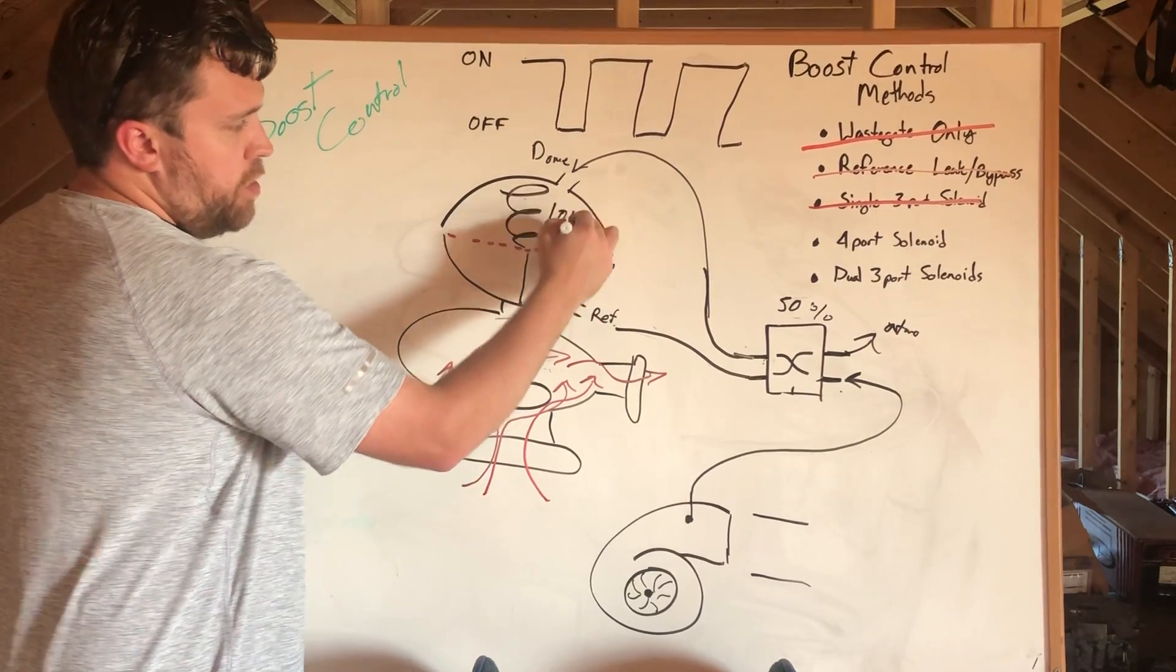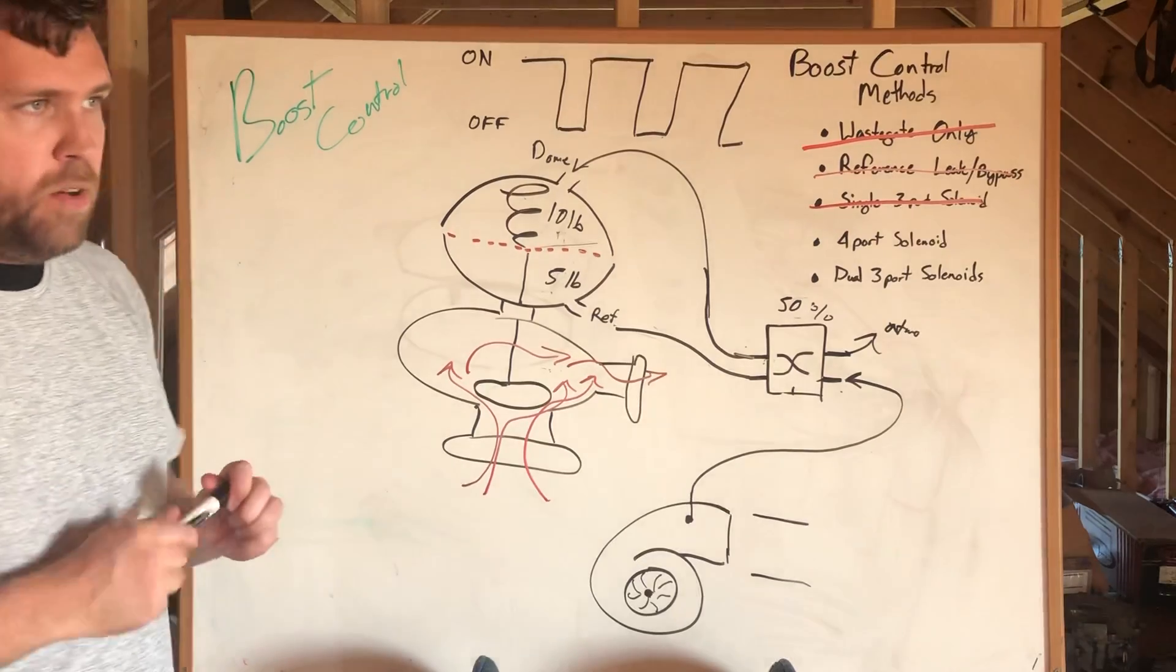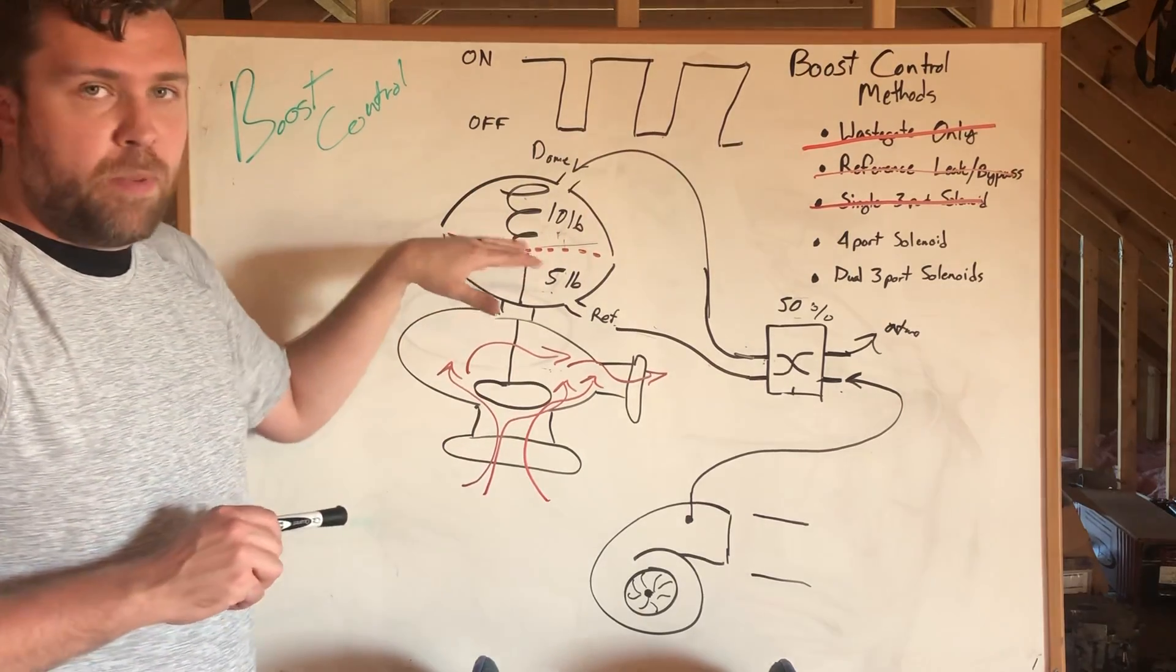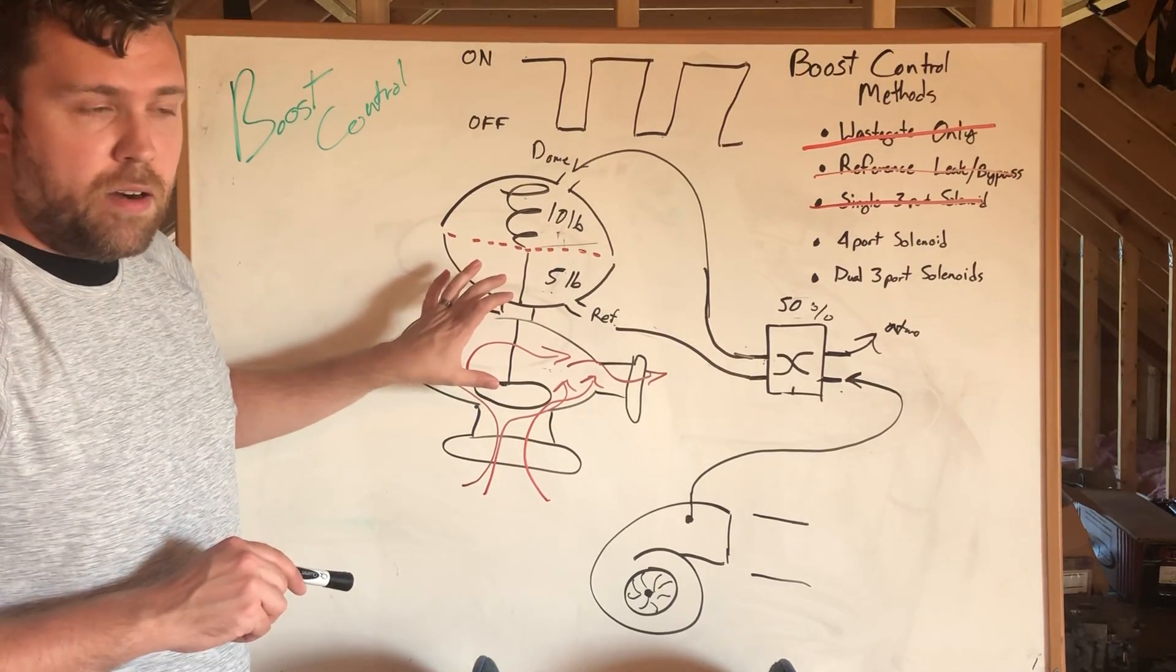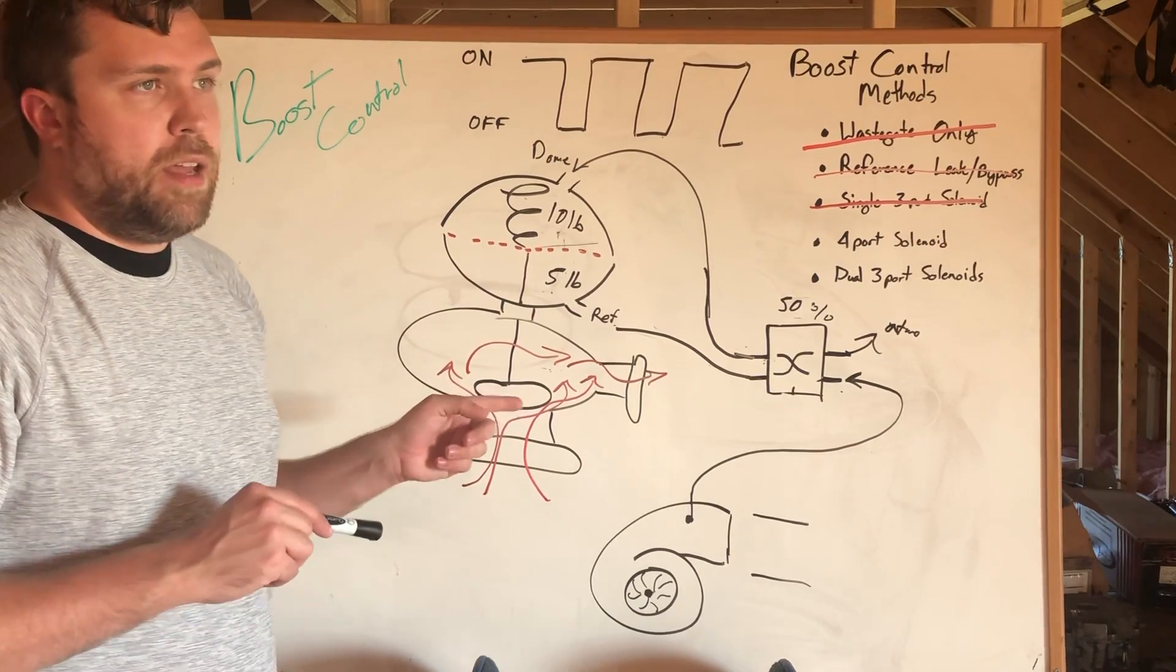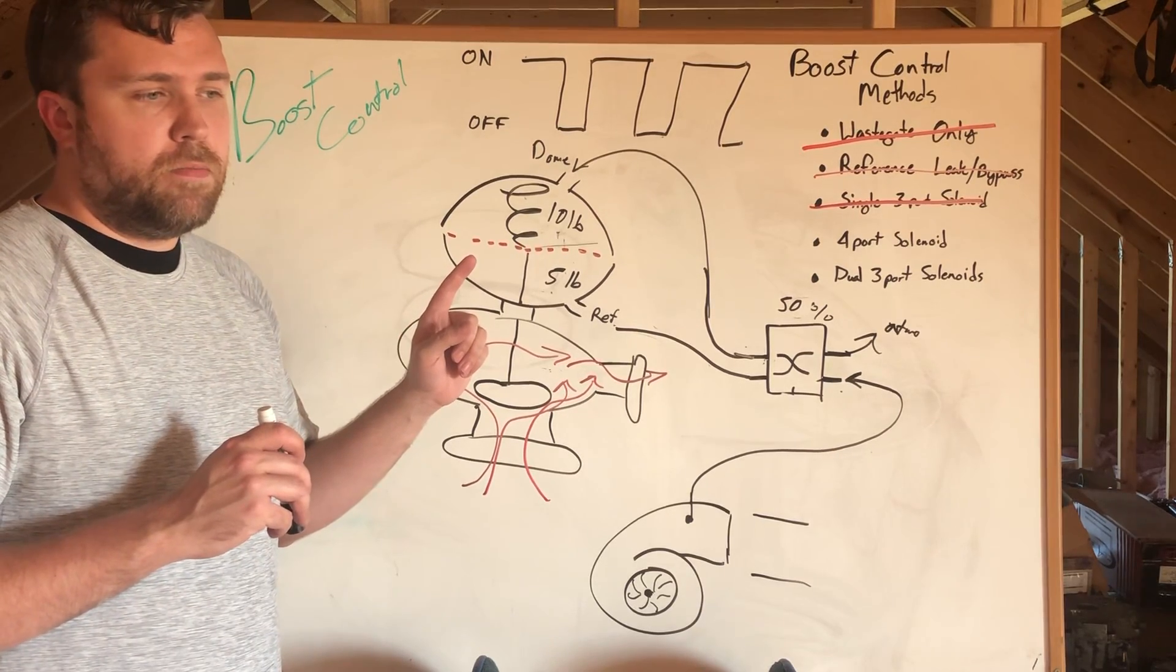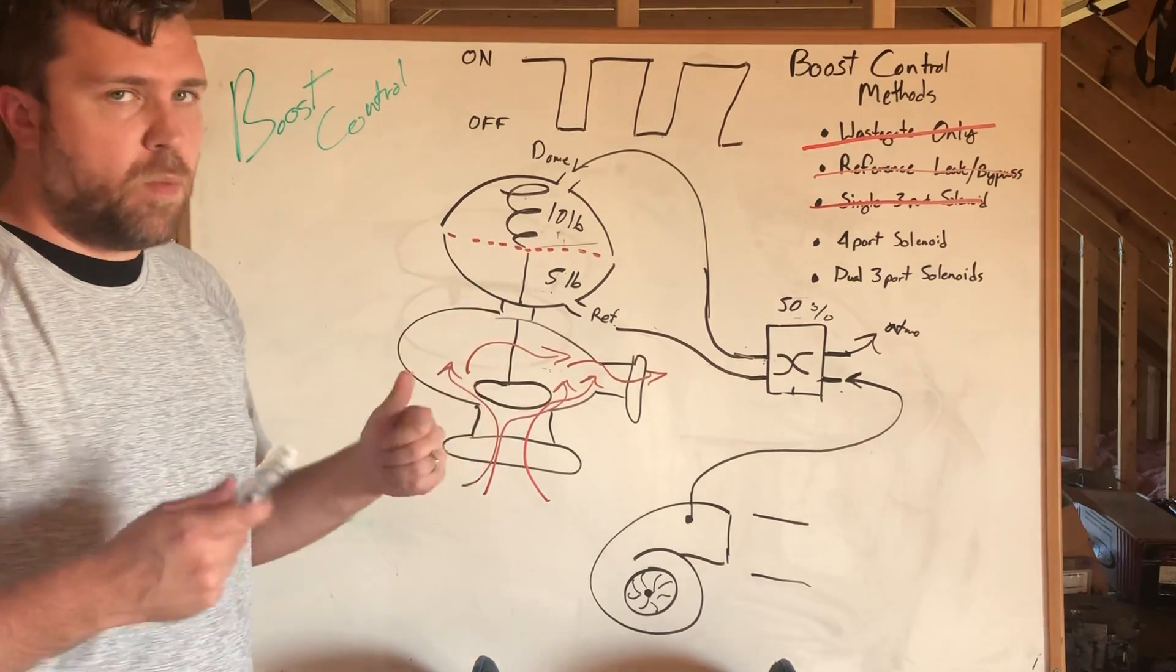Now this is flirting partially with disaster. If you remember back to wastegate-only and the reference bypass, when we take pressure away from the reference side, now the only thing that's trying to open our wastegate is back pressure. That's dangerous in the sense that you can let it not be controlling boost based on your actual boost in the manifold, but rather work on back pressure, and that's not always consistent with what boost is getting in the manifold.